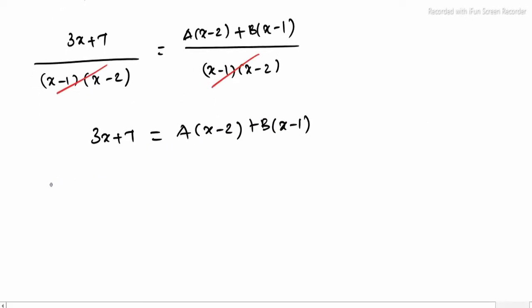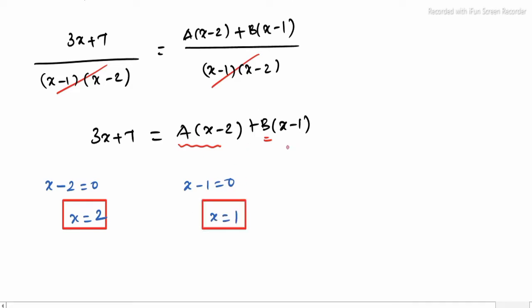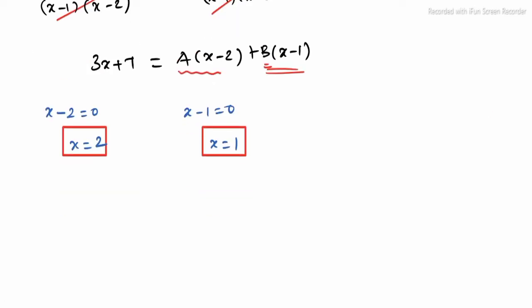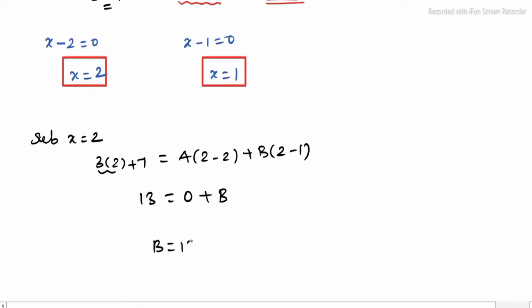Now A and B values are required, so find the critical points. First, x minus 2 = 0, so x = 2. Apply x = 2: A term becomes 0, so find B value. Substituting x = 2: 3(2) + 7 = A(2 minus 2) + B(2 minus 1). So 13 = 0 + B(1). Finally, B = 13.